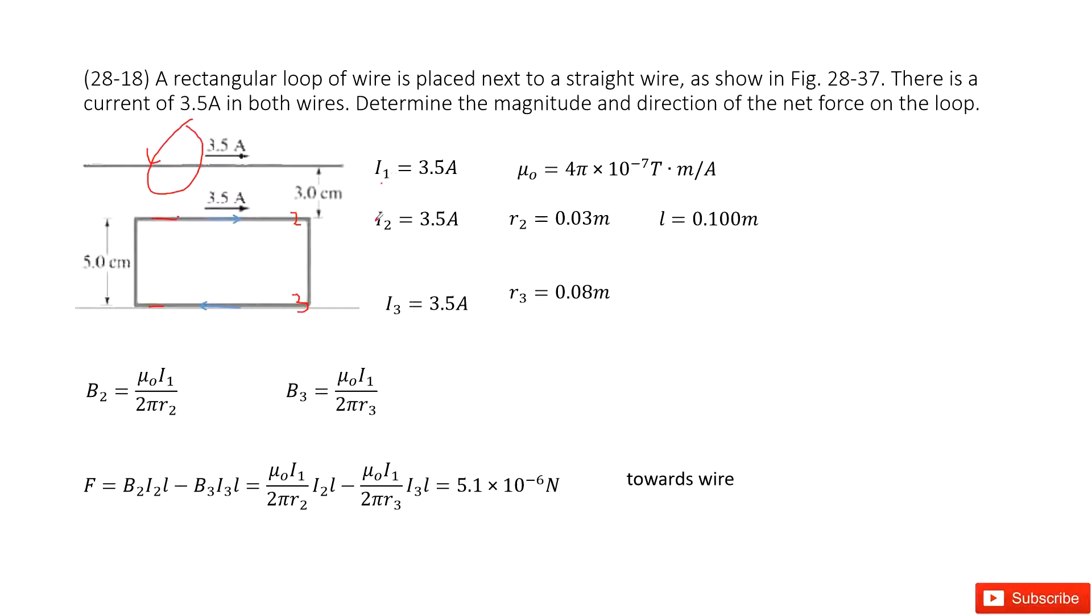So you can see I1 is this one. R2 is the distance from the wire to this side, 3 cm. So we write it there.